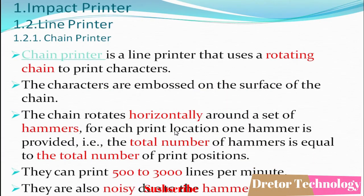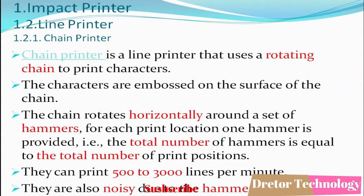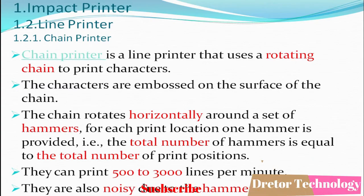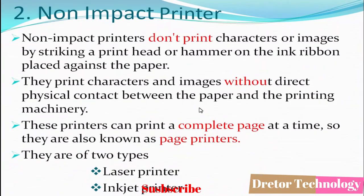The second type of line printer is the chain printer. The chain printer uses a rotating chain to print characters. The characters are embossed on the surface of the chain. For each print location, one hammer is provided, so the total number of hammers equals the total number of print positions. It can print 500 to 3,000 lines per minute and is also noisy due to the hammering action.